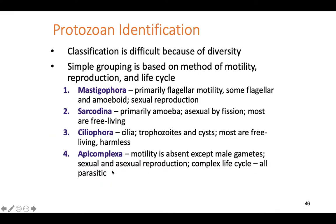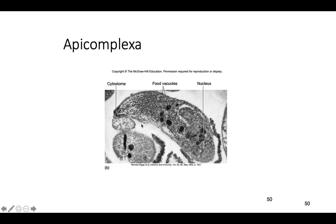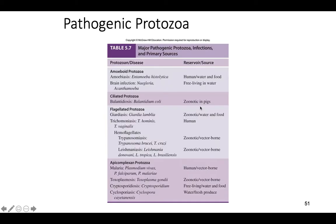The last group is Apicomplexa — these guys cannot move at all, except for the male gametes during the reproductive cycle. They are capable of sexual and asexual reproduction, and they are all parasitic. They live inside other cells, use host cells to get nutrients, and must have another cell to complete their life cycle. Here are some pathogenic protozoa — you can see what group they're in, the disease they cause, and where they're found in the environment.